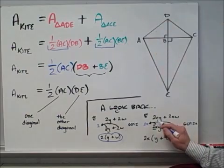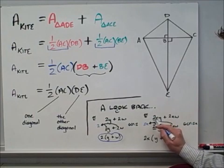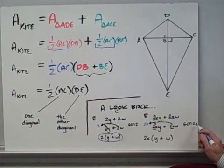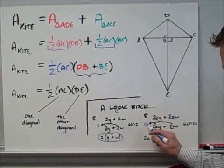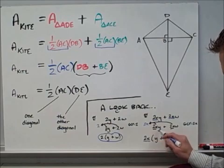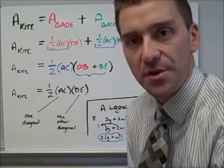Same thing here. If I get a little more depth, 2xy plus 2xw, the common factor happens to be 2x. That's the GCF. So I can take that 2x and factor it out of this expression, factor out of this expression, which means 2x, the GCF goes in front, and whatever's left goes in the parentheses.